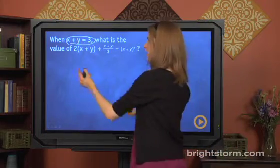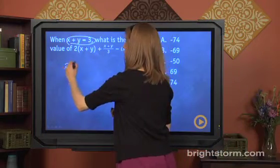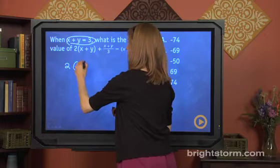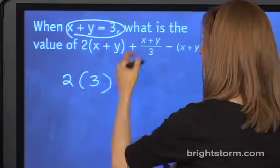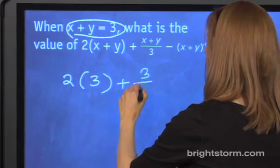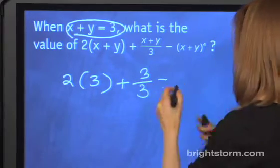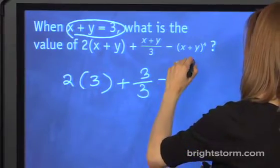So it turns into a really straightforward problem. We have 2 times 3, right, x plus y, plus 3 over 3, or just 1, minus 3 to the 4th.